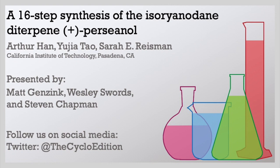Hello and welcome to this episode of The Cyclo Edition, the podcast for those looking to go above and beyond in their understanding of the organic literature. I'm Wesley Swords and I'm joined today by Stephen Chapman and Matt Gensink. The paper we will be discussing today is titled A 16-Step Synthesis of the Isoryanodine Diterpene Plus-Percyanol by the group of Sarah Reisman, who is a professor of chemistry at the California Institute of Technology. Her group is focused on the discovery, development, and study of new chemical reactions within the context of natural product total synthesis. Today's paper describes the synthesis of Plus-Percyanol in an antiselective fashion through the use of a convergent synthetic route.